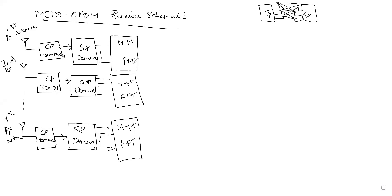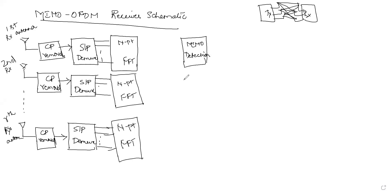The signal has to go through several antennas, so for that we will have MIMO detection at the output. Each path will have MIMO detection.